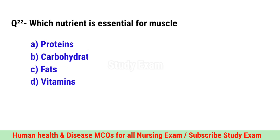Question No. 22. Which nutrient is essential for muscle growth? Correct option is A. Proteins.